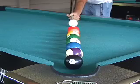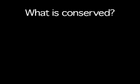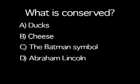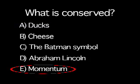Here's a problem to test your knowledge. Watch this next shot closely. In this shot, disregarding friction, what is conserved? A. Ducks. B. Cheese. C. The Batman symbol. D. Abraham Lincoln. Oh wait. And E. Momentum. No Brett. It is not C. The Batman symbol. It's A. I mean E. Momentum.